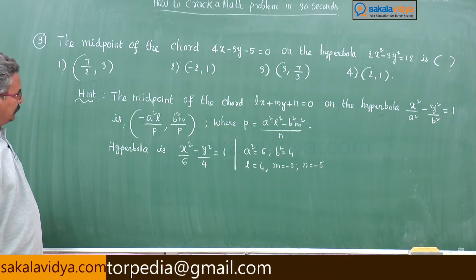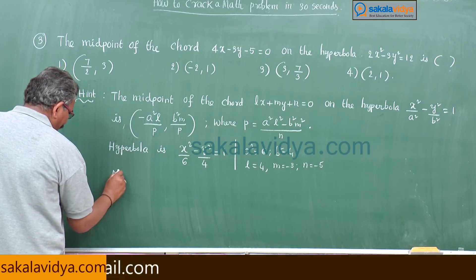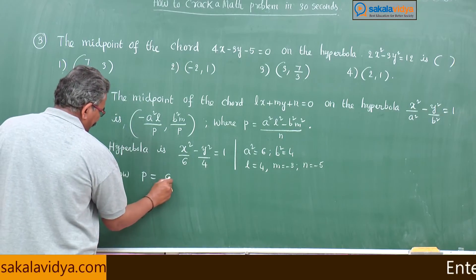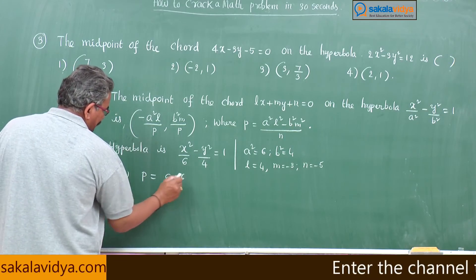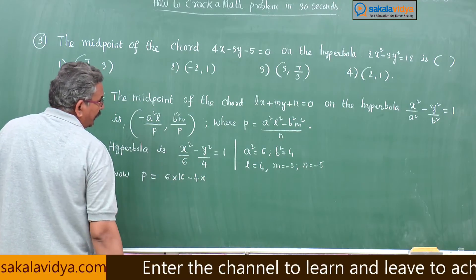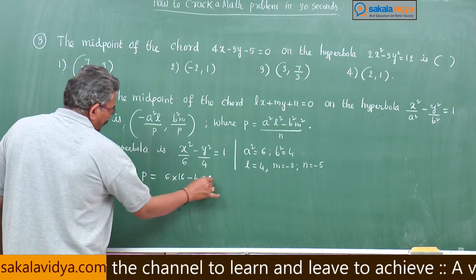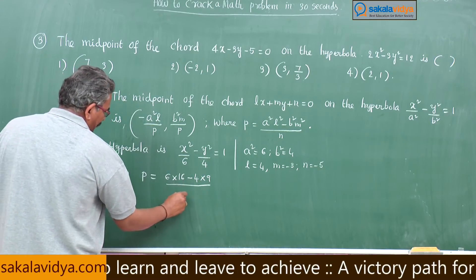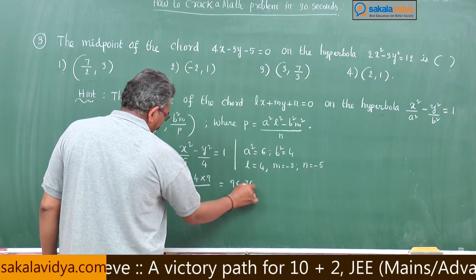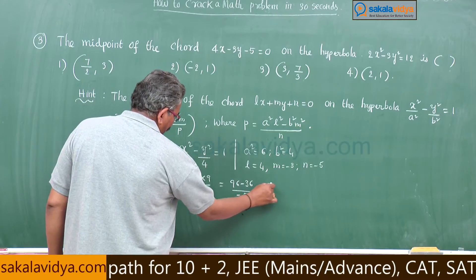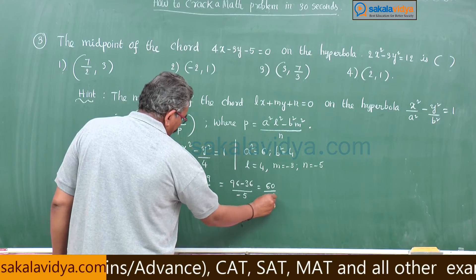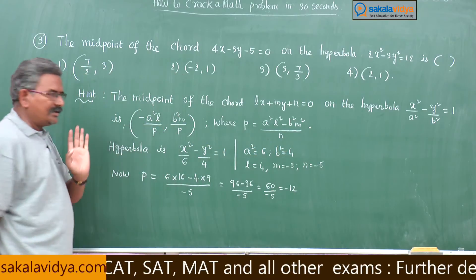So now p value we have to find out. P equals a square 6 into l square 16, so minus b square minus 4 into m square, m square is 9 by p value is minus 5. So 96 minus 36 by minus 5, so 60 by minus 5, so minus 12. P value is minus 12.